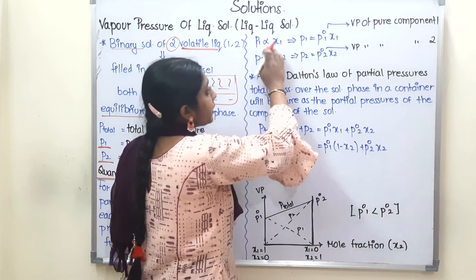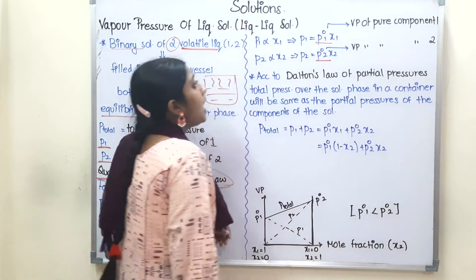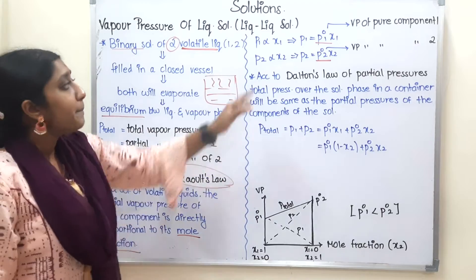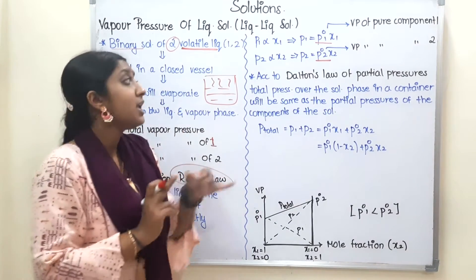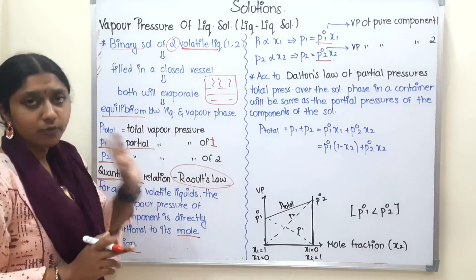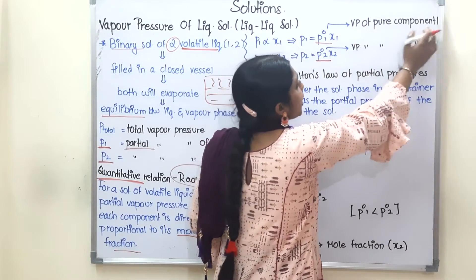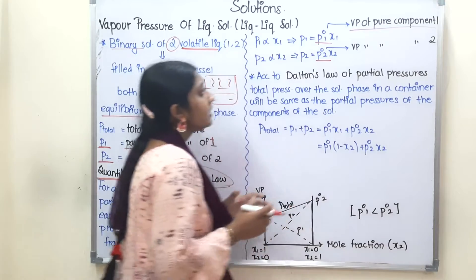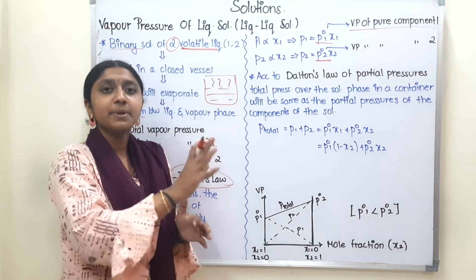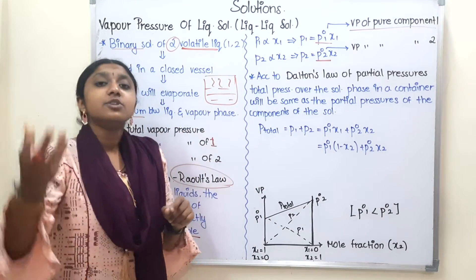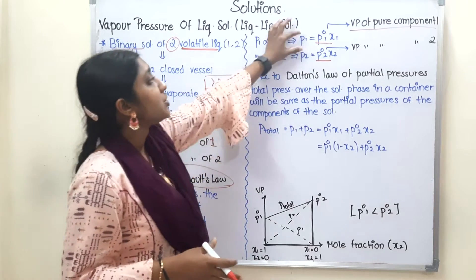If we remove the proportionality sign, we introduce a constant. That constant is P01 for the first component and P02 for the second. So P1 = P01 · X1, where P01 is the vapor pressure of the pure component 1. When it is pure — there is no other component mixed — its vapor pressure is P01.